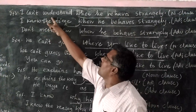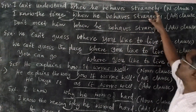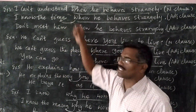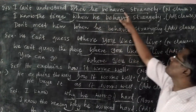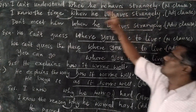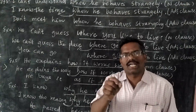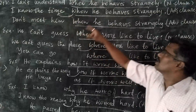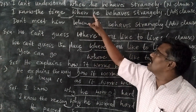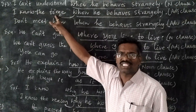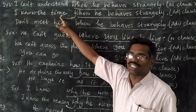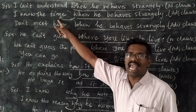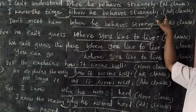Example number three: 'I can't understand when he behaves strangely.' Here, we ask: I can't understand what? The answer is 'when he behaves strangely.' So this clause answers the question 'what,' making it a noun clause. Second: 'I know the time when he behaves strangely.' Here, this clause describes the antecedent 'time,' a noun which comes before it. So it is called adjective clause. The rule is: whenever there is an antecedent before a clause, it is called adjective clause.